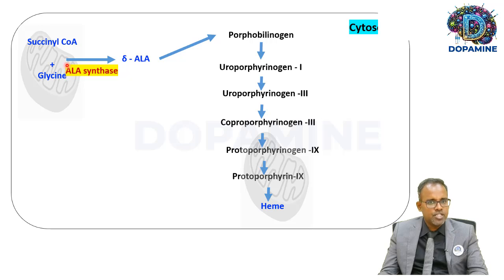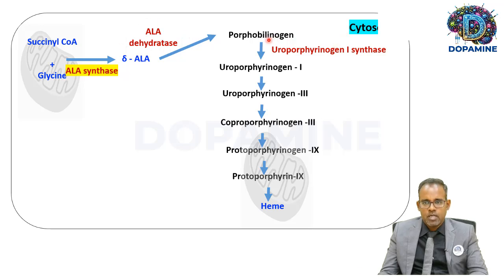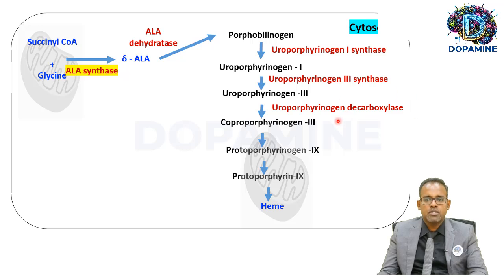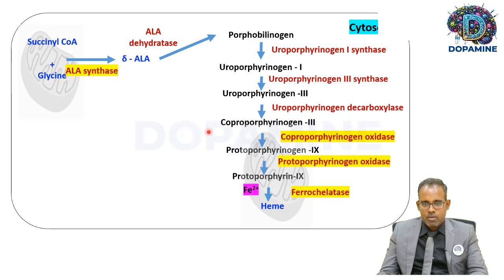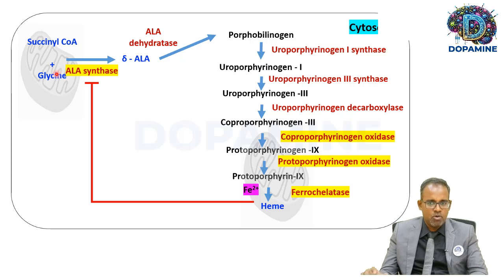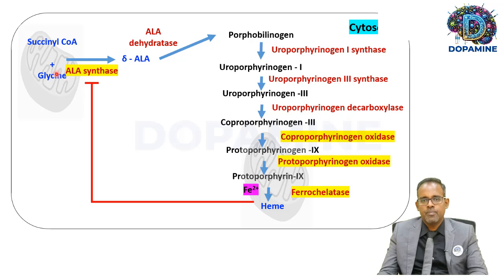The enzymes for each step are: ALA dehydratase (ALA to porphobilinogen), uroporphyrinogen 1 synthase, uroporphyrinogen 3 synthase, uroporphyrinogen decarboxylase, coproporphyrinogen oxidase, protoporphyrinogen oxidase, and ferrochelatase — the enzyme that incorporates iron into heme. The mitochondrial enzymes are highlighted. ALA synthase is subject to feedback inhibition by heme; when heme levels are high, it inhibits ALA synthase.